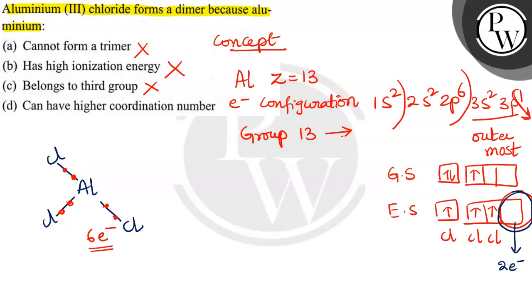First coordination number: three chlorine atoms are surrounding, so coordination number three. This is the dimer form, and this chlorine is donating the lone pair of electrons. This is a dimer of aluminium chloride.